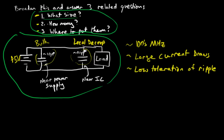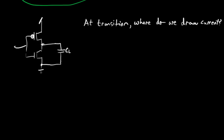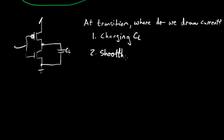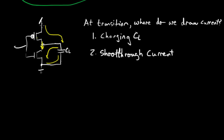To answer the question of size, consider an inverter circuit with a PMOS and an NMOS charging and discharging a capacitive load C_L. At a transition, the circuit draws current for two things: charging C_L, and shoot-through current — which occurs when both transistors are slightly on during the transition region and some current is drawn through both transistors to ground.